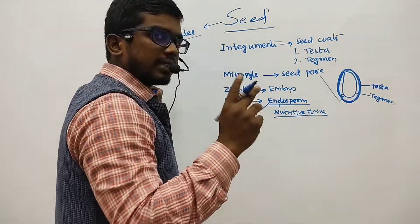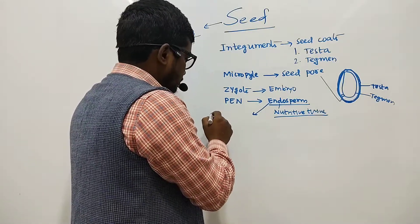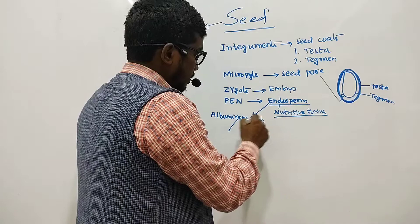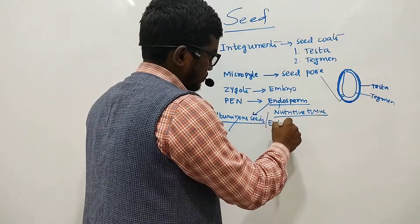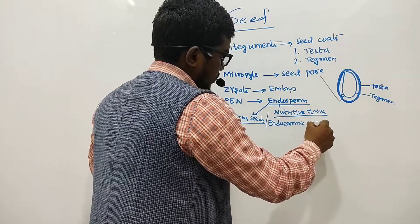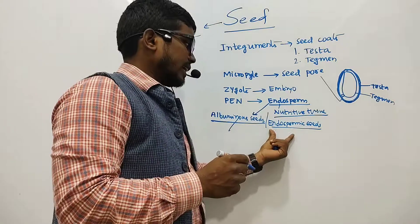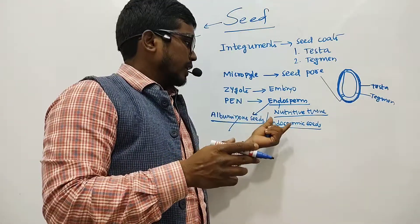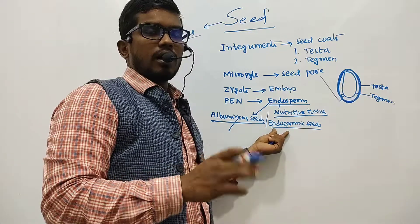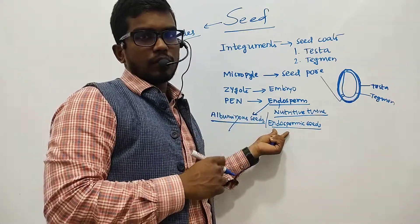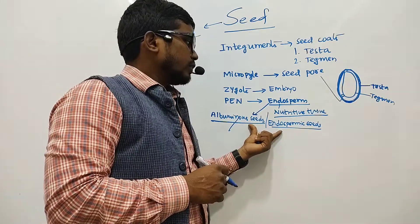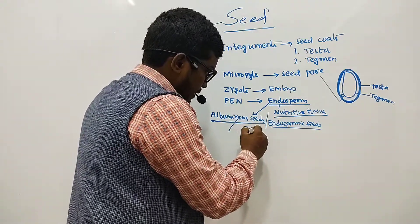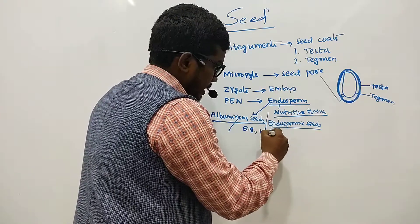There are two types of seeds based on endosperm. First, albuminous seeds, also called endospermic seeds, where endosperm is present — either partially or wholly left over after development. Examples include wheat and maize.